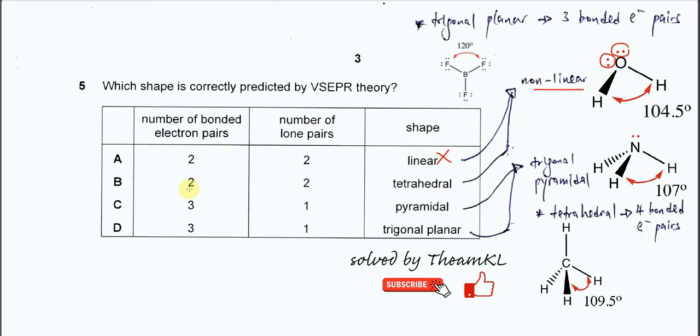So for B, again it's two bonding pairs, two lone pairs, so it's supposed to be nonlinear, it's not tetrahedral.